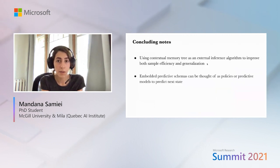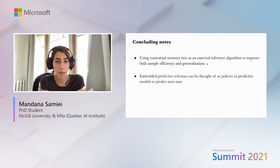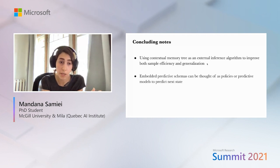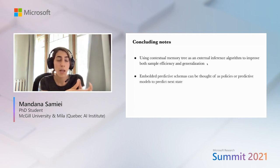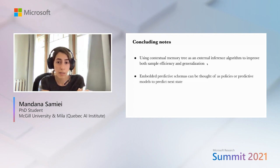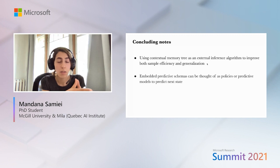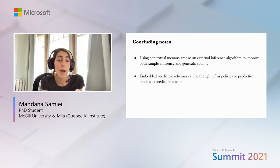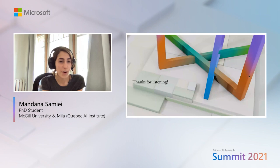In conclusion, we propose that embedding predictive schemas into contextual memory tree as an external learning algorithm would be a powerful technique to improve both sample efficiency and generalization. As the next step, we would like to explore how these embedded predictive schemas can be modeled — they can play the role of decision policies to select actions or perform as predictive models to estimate future states. A neuroscience evidence of such a mechanism is how semantic and episodic memories help each other to remember specific events, suggesting that semantic knowledge of a task can provide a framework for episodic learning. These rules might also remind us of semantic memory. Thank you for your attention.